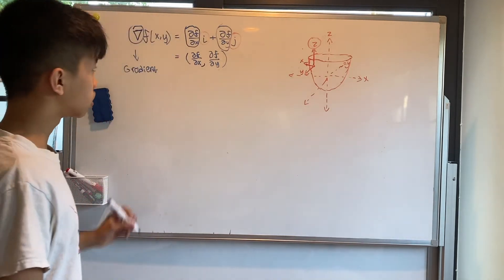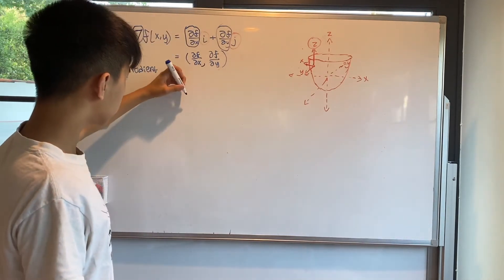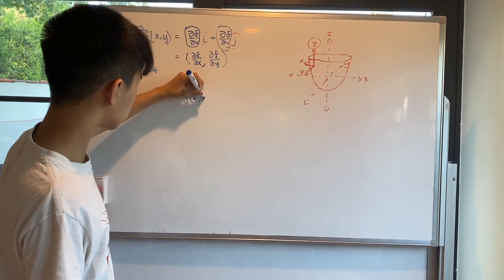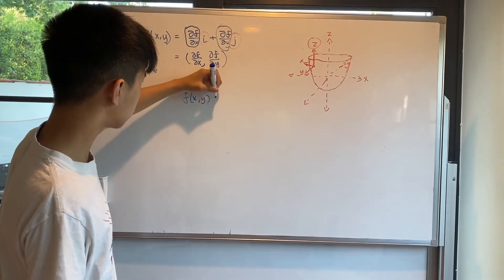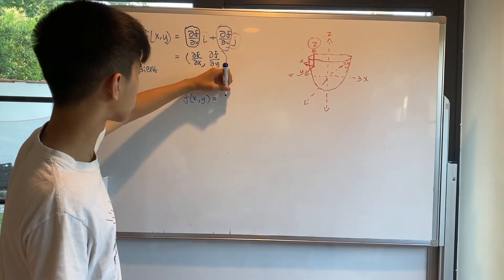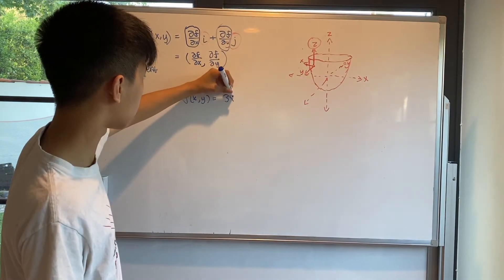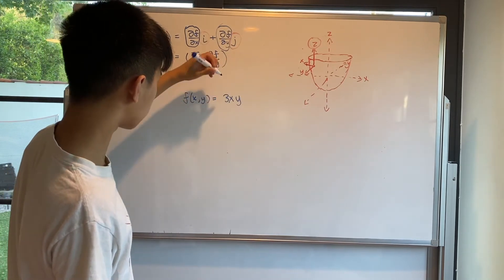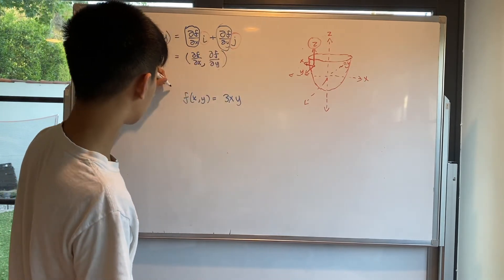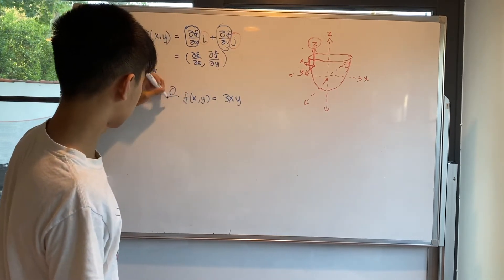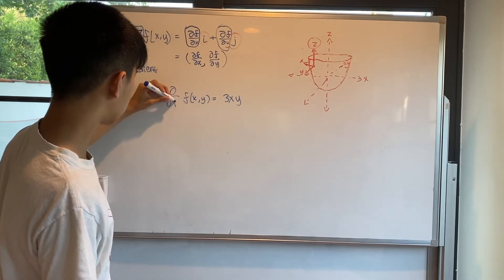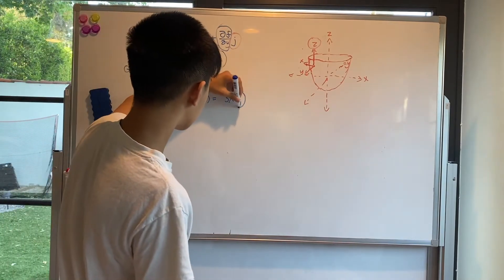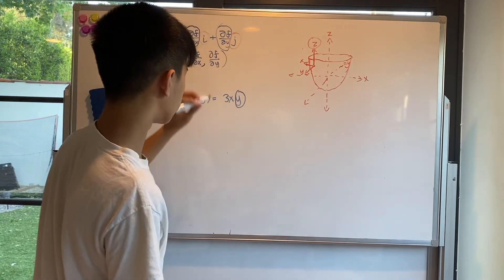So let's say I give you the function f(x, y) = 3xy. If you want to take the partial derivative of that with respect to x, you'd have to treat y as a constant.